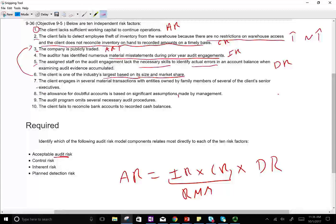Number seven, the client engages in several material transactions with entities owned by family members of several of the client's senior executives. Here we are involving related party transactions. This is going to increase inherent risk. Once you have related party transactions, the transaction becomes inherently risky because they may not be at arm's length transactions.